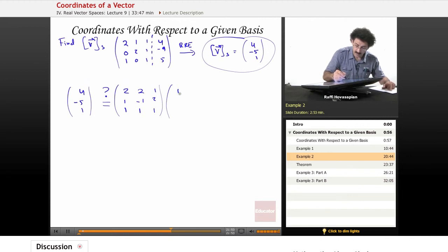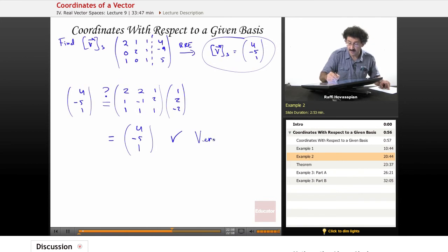Times the coordinate vector with respect to t—yes, as it turns out, when I do the multiplication on the right-hand side, I end up with 4, negative 5, 1. So yes, it is verified.